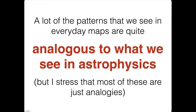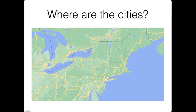So one interesting thing is that we can learn a lot about a city by studying its map. And it's the same with astrophysics—we make maps of the universe and we can learn about it. One interesting thing is that we actually see a lot of analogies between city maps and the universe. So for instance, here's a map of the northeast, the east coast of North America, and I've removed the labels from this map.